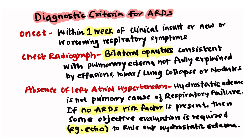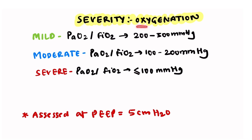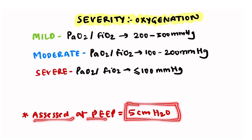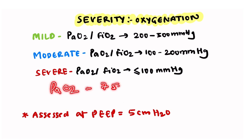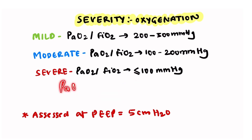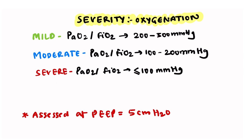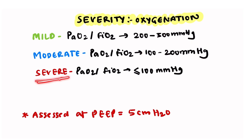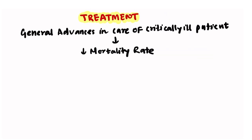The fourth Berlin criterion is severity based on oxygenation, assessed at a PEEP of 5 cmH₂O. Normal PaO₂/FiO₂ is approximately 500 mmHg. In mild ARDS, PaO₂/FiO₂ is 200–300 mmHg; in moderate ARDS, it is 100–200 mmHg; and in severe ARDS, it is less than 100 mmHg. A patient must fulfill all four criteria to be labeled as ARDS.